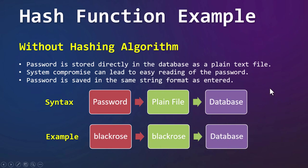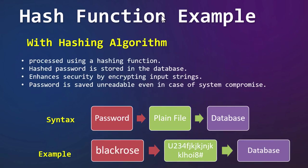If the system where passwords are stored is compromised by a bad attacker or hacker, he or she can easily read the password. What would be the benefit of using a hash algorithm for storing passwords? Whenever we set our password, it takes the password as an input string and with the help of a hashing function converts the password into a hash — just a random combination of numbers and alphabets — and stores it in the database. So if we give the password 'black rose' as input, it will be converted to some jumbled characters, and that hash will be stored in the database.